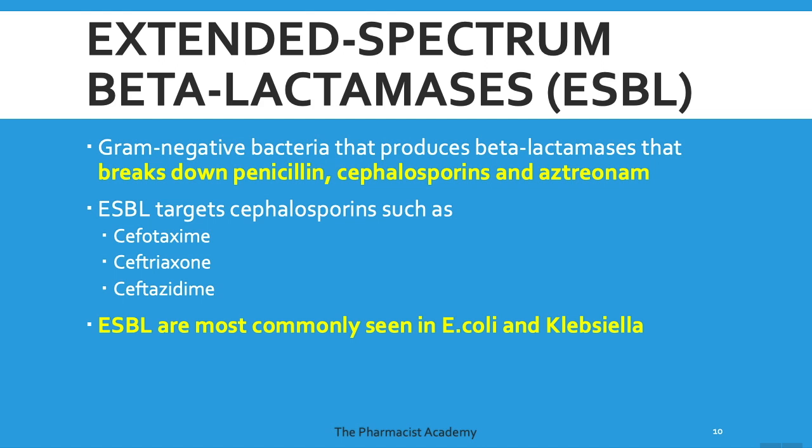Extended-spectrum beta-lactamases, or ESBL — these are gram-negative bacteria that produce beta-lactamases that break down penicillin, cephalosporins, and aztreonam. Initially, antibiotics were pretty effective, but bacteria have evolved, developing new resistance mechanisms that now affect cephalosporins. ESBL targets certain cephalosporins specifically: cefotaxime, ceftriaxone, and ceftazidime. Since ceftazidime is used for Pseudomonas coverage, if a bacteria becomes resistant to it, that's a pretty big deal.